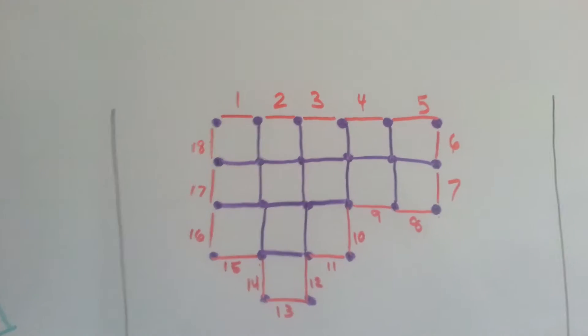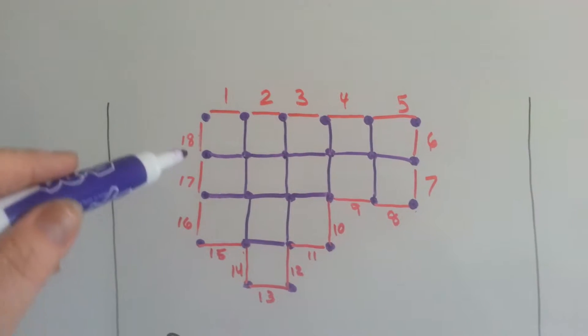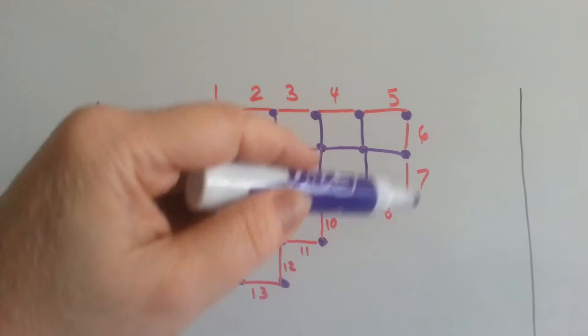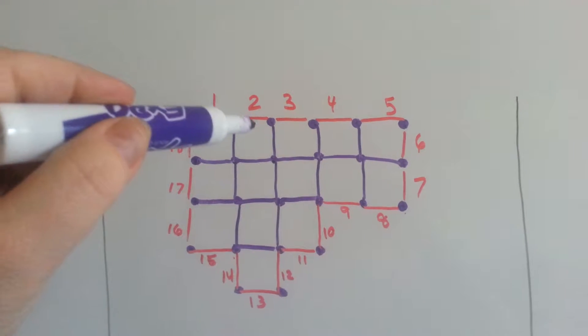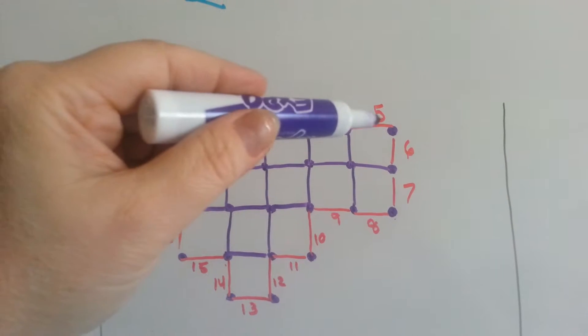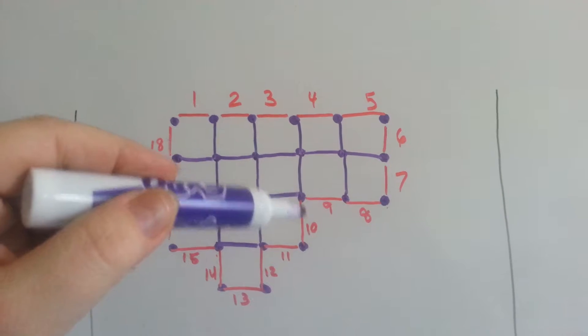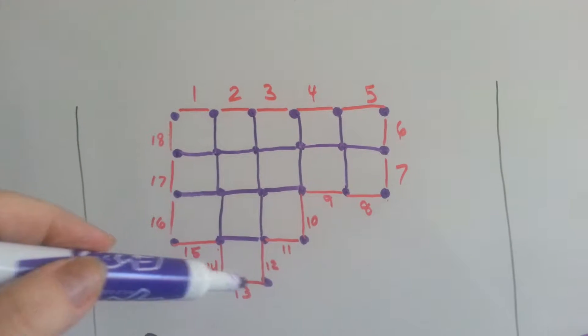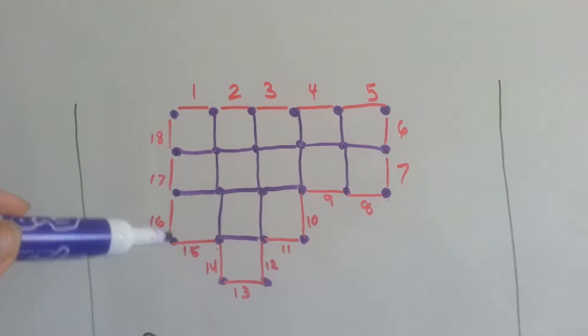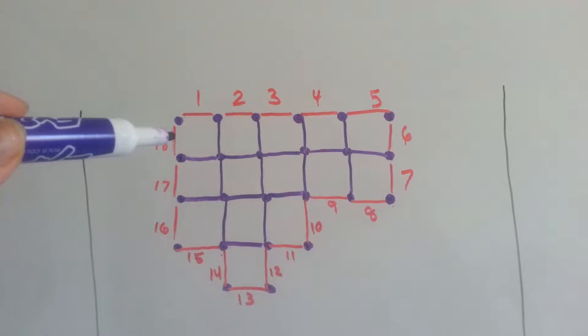Take a look at this funky little drawing I made. So we're going to count the outside edge here. 1, 2, 3, 4, 5, 6, 7, 8, 9, 10, 11, 12, 13, 14, 15, 16, 17, 18. Okay?